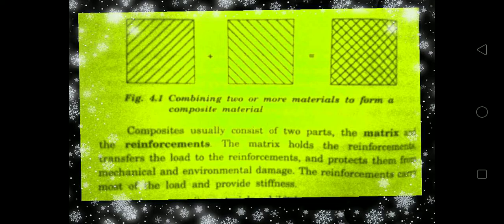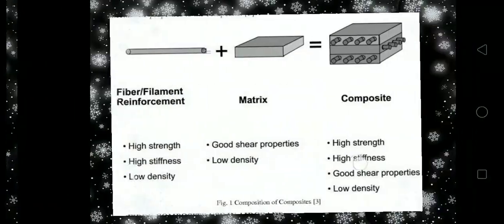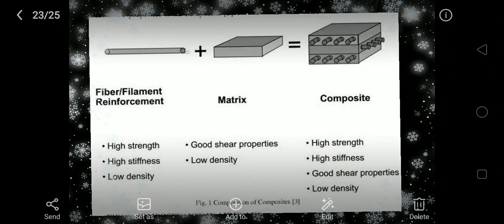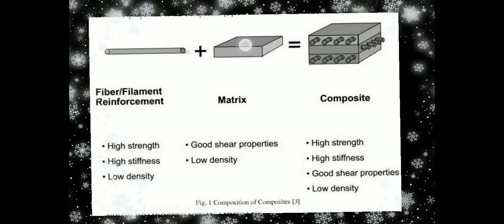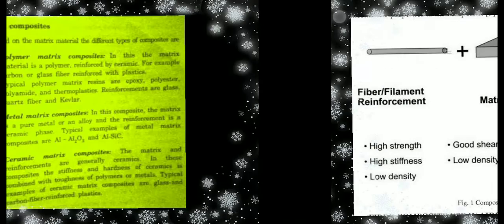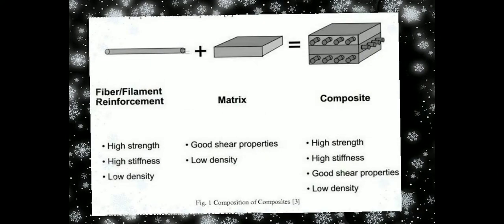In a composite, there are two parts: one is the matrix and the other is fiber reinforcement. The matrix is like a fabric — it holds the fiber. The matrix holds the fiber reinforcement, and together they form the composite with its properties.